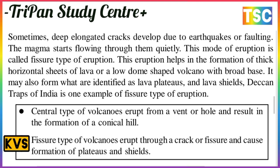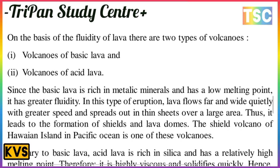Fissure type eruptions help in the formation of thick horizontal sheets of lava or low dome-shaped volcanoes with a broad base — also identified as lava plateaus and lava shields. The Deccan Traps of India is one example of fissure type eruption. Central type volcanoes erupt from a vent and result in the formation of conical hills, while fissure type volcanoes erupt through cracks, causing the formation of plateaus and shields. On the basis of the fluidity of lava, there are two types of volcanoes: volcanoes of basic lava and volcanoes of acid lava.